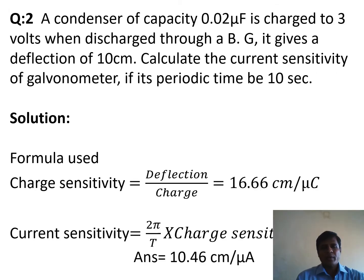Question number 2: A condenser of capacity 0.02 microfarad is charged to 3 volts. When it is discharged through a ballistic galvanometer, it gives a deflection of 10 centimeters. Calculate the current sensitivity of the galvanometer if the periodic time is 10 seconds.